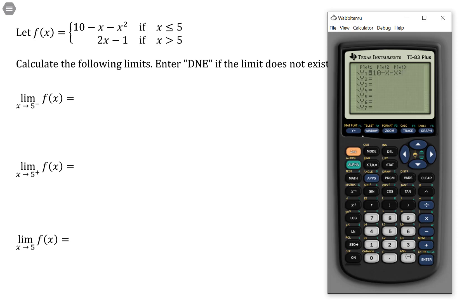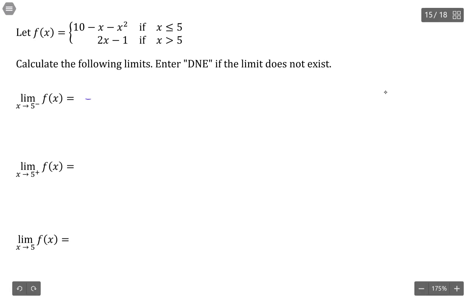So minus x squared. Make sure your table is set up properly. And then start putting in values that are less than 5 but approaching. So 4.9, 4.99, 4.999. And there's no particular number of decimals you need to use. Just keep doing it until you can draw a conclusion as to where your value is approaching. So I'd say it's safe to assume we are approaching negative 20.